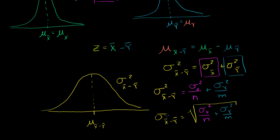This formula looks a little like a distance formula, which is neat. The whole point is that we can now make inferences about a difference of means. If we have two samples and find a difference in their means, we can determine how likely that difference was just by chance. We're going to do that in the next video.